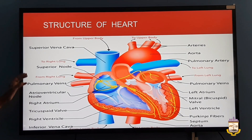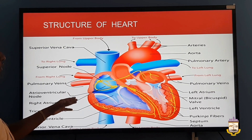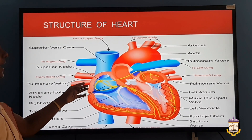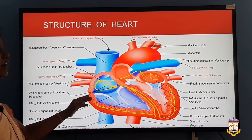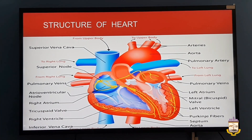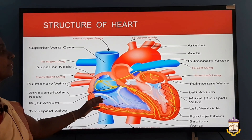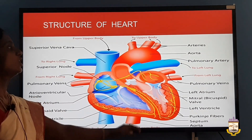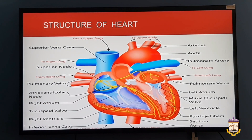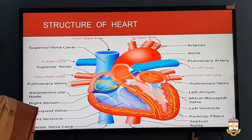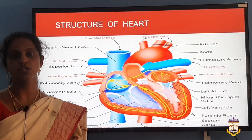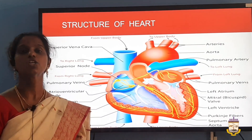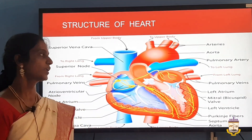The deoxygenated blood flows from the right auricle to the right ventricle. The tricuspid valve allows blood flow in one direction only. From the right ventricle, the blood flows through the pulmonary artery to the lungs for purification. The pulmonary artery is the exception — it carries deoxygenated blood to the lungs, unlike other arteries.